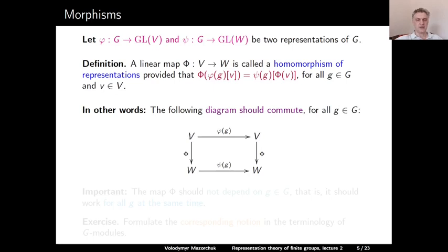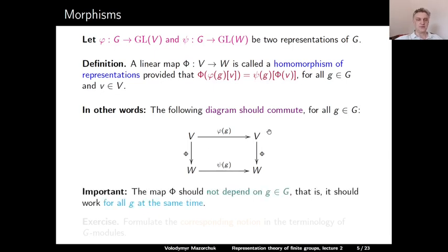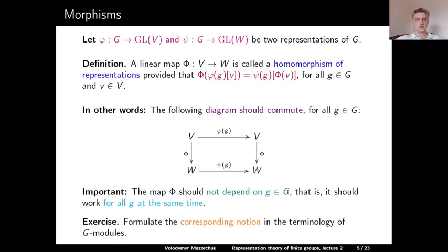In this diagram, we can start with V, apply the linear transformation φ(g), and then apply Φ. Alternatively, we can first apply Φ and then apply ψ(g) on W. This diagram should commute for any g ∈ G. It is important to note that the map Φ does not depend on the choice of g — it should work for all g simultaneously. It is a nice exercise to formulate the corresponding notion in the terminology of G-modules.